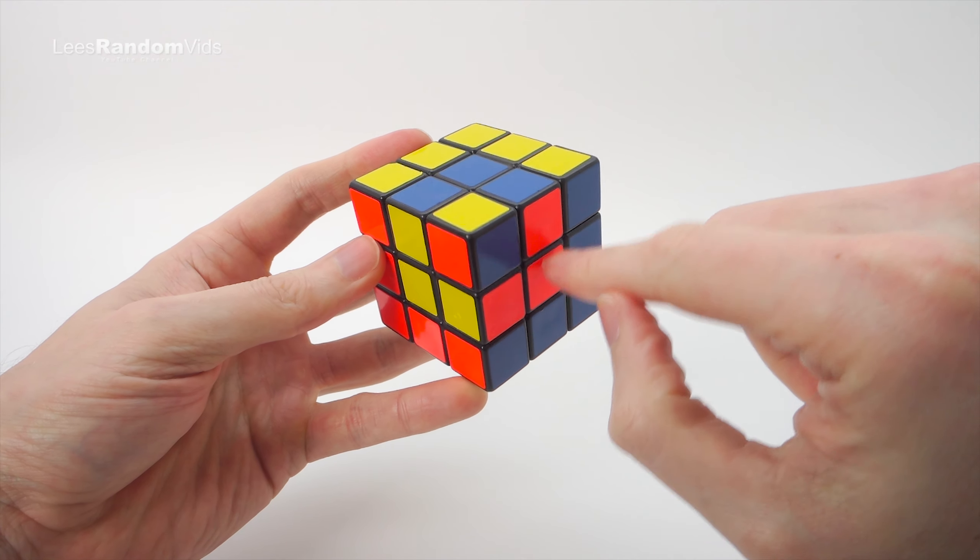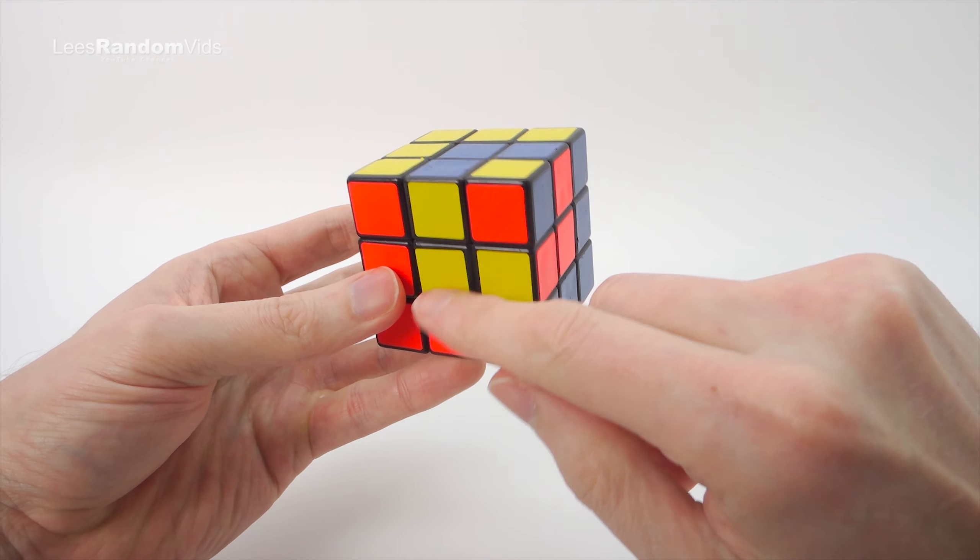And that gives us this ring pattern which you could also call a cube in a cube in a cube.